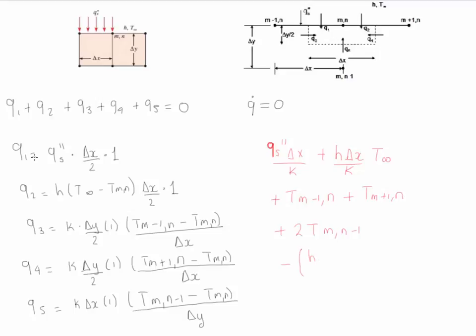Minus H delta X divided by K plus 4 minus H delta X divided by K plus 4 T M N is equal to 0.